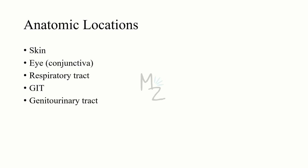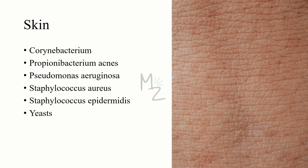Anatomic locations of normal flora include skin, eye (mainly conjunctiva), respiratory tract (including oral cavity, nose, and mouth), GI tract, and genitourinary system. Microorganisms that are part of the normal flora of skin include Corynebacterium, Propionibacterium acnes, Pseudomonas aeruginosa, Staphylococcus aureus, Staphylococcus epidermidis, and one fungus — yeast.